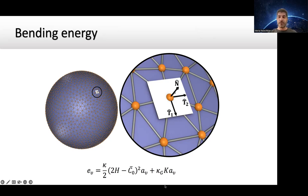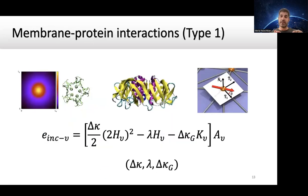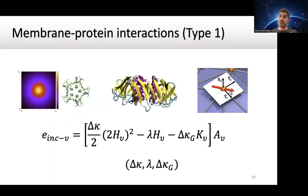We use the Helfrich Hamiltonian for each vertex. The energy per vertex includes the area associated with the vertex, the mean curvature (sum of the two principal curvatures), the Gaussian curvature, and two moduli: bending rigidity and Gaussian modulus. The Gaussian modulus usually doesn't play much role because the topology of the system remains constant. The membrane has two model parameters plus the spontaneous curvature C0, which means the membrane wants to bend in a specific direction.